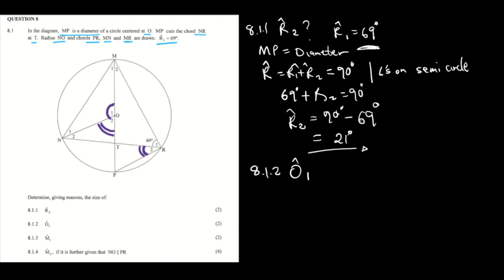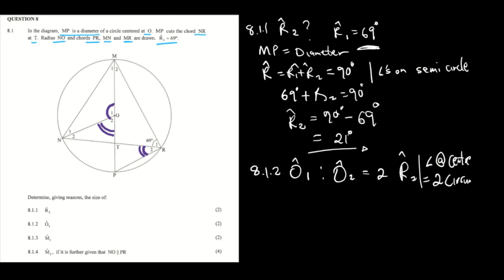For 8.1.2, we want to identify angle O1. First we identify angle O2, using the rule that angle O2 is equal to twice angle R2. The reason is the angle at the center is equal to twice the angle at the circumference. So angle O2 equals 2 times 21 degrees, which gives us 42 degrees.